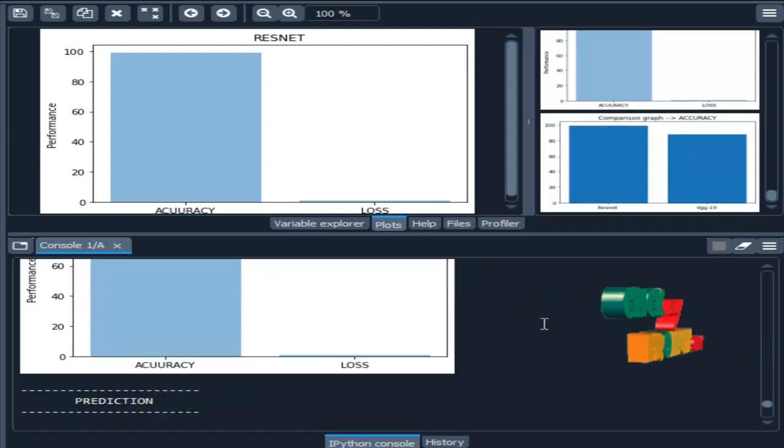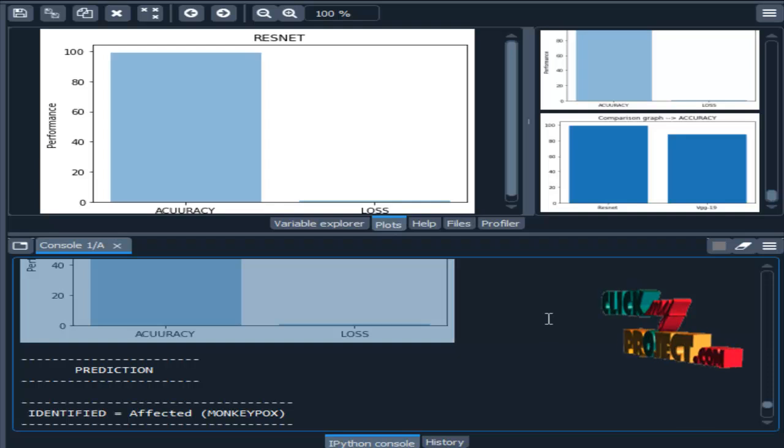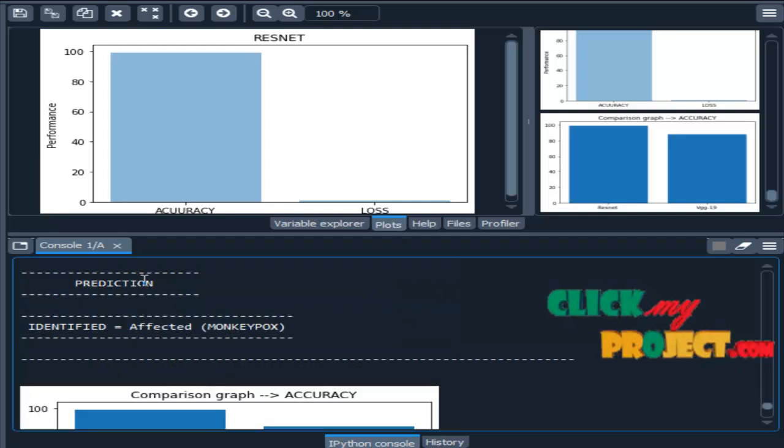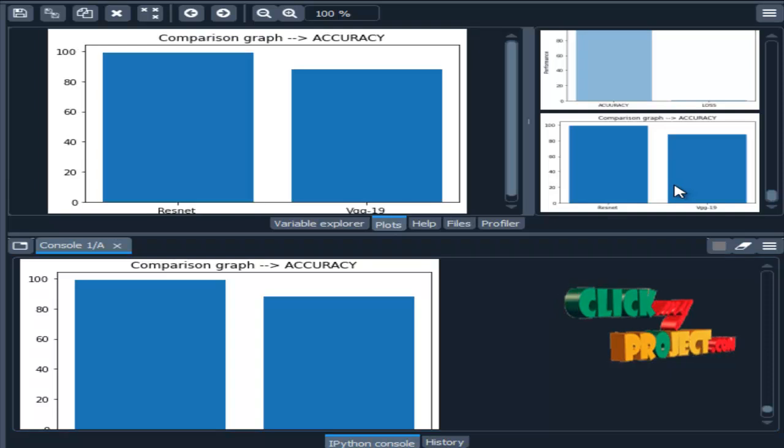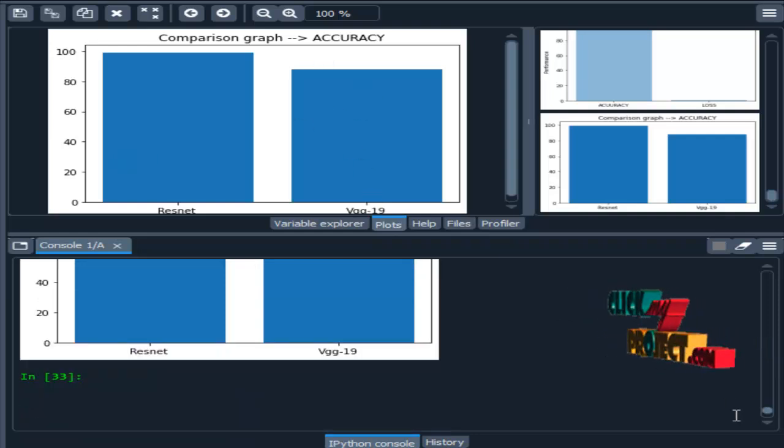Then, it is the final ResNet graph and prediction. In prediction, we are identified as affected by monkey box. This is the comparison graph for both ResNet and VGG-19. ResNet is considered as proposed and VGG-19 is considered as existing.